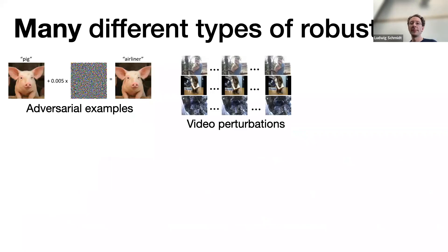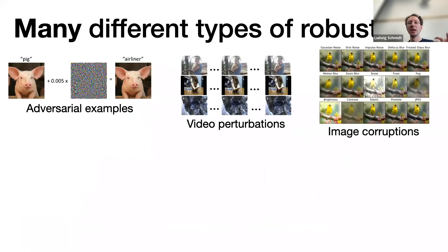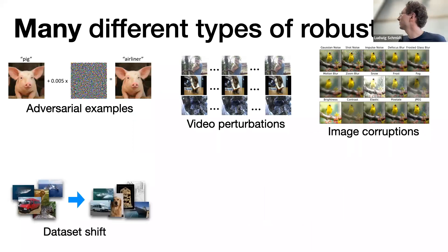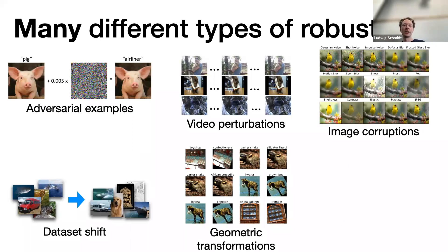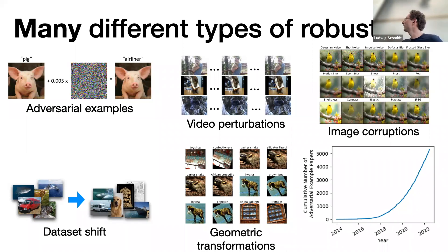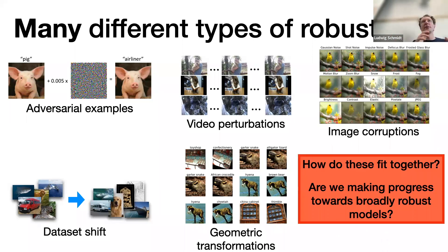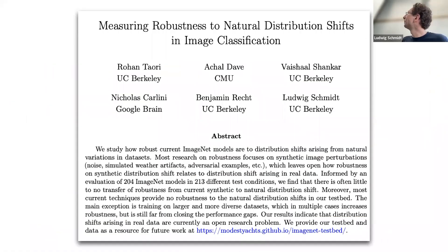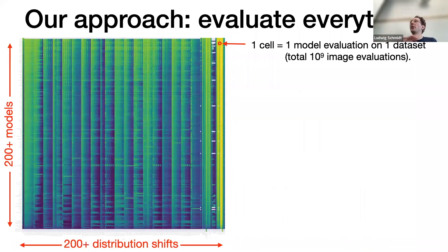There's also adversarial robustness, perturbations from videos, image corruptions like ImageNet-C, dataset shifts, and geometric transformations. Nicholas Carlini keeps track of all the adversarial robustness papers and there are just a lot of them. Around 2019-2020 I found this increasingly confusing — so many ways to test robustness, and I wasn't sure how they fit together or whether we were making progress toward broadly robust models. So we did a big benchmarking study.